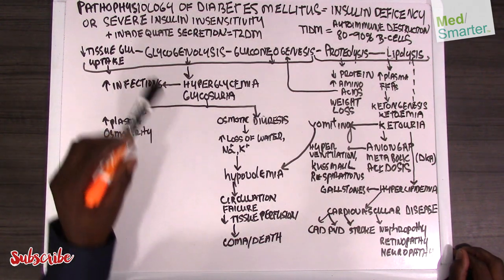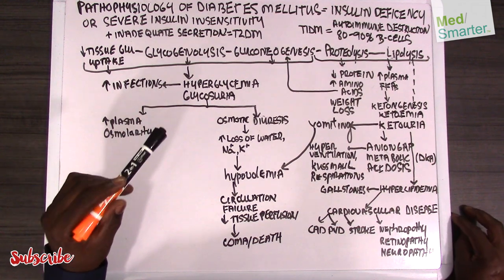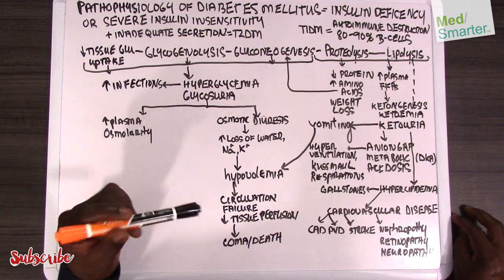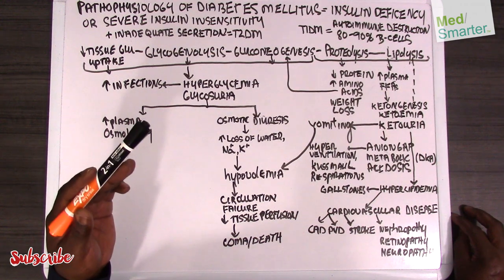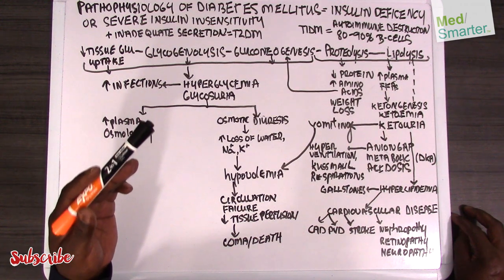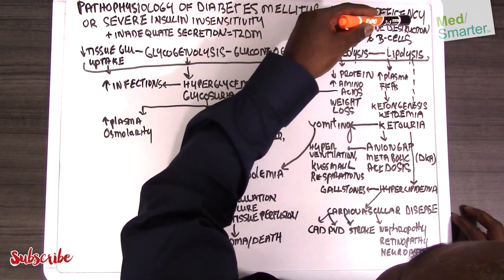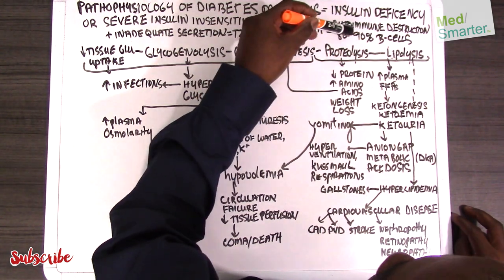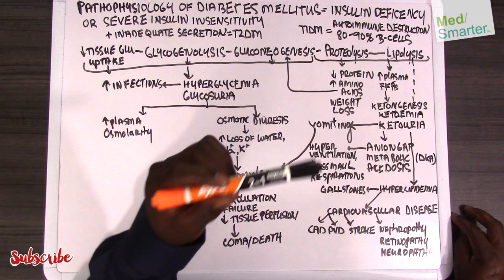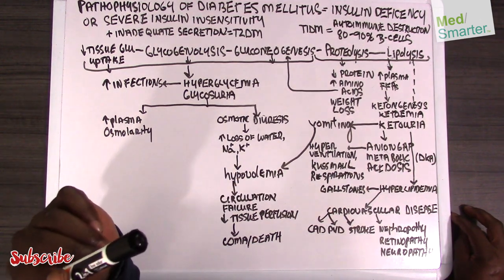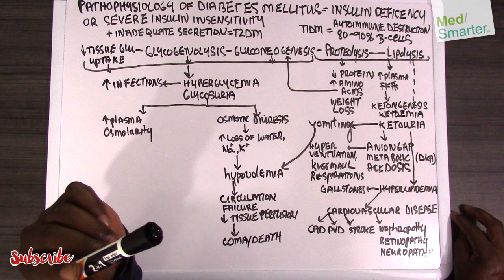The major factor responsible for triggering the pathophysiologic cascade in Type 1 diabetes mellitus is autoimmune destruction of 80 to 90% of the beta cells in the islets of Langerhans of the pancreas.